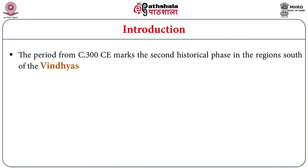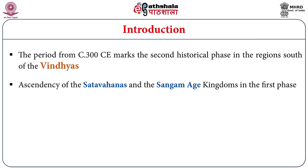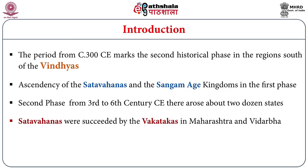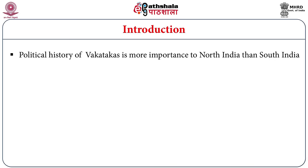The period from the third century Christian era marks the second historical phase in the history of the South of the Vindhyas. In the first phase, it is the ascendancy of the Satavahanas in Dakkan, with Pratistanapura as their capital, and Sangama kingdoms in the extreme South Tamil Nadu region. In the second phase, from the third century to the sixth century Christian era, there arose many kingdoms — nearly a dozen states — ruled over different parts of Dakkan with independent powers. Among that, the Satavahanas were succeeded by the Vakatakas in Maharashtra and Vedarbha. Their political history is important to Northern India than South India because they have matrimonial and diplomatic relations with the Guptas.